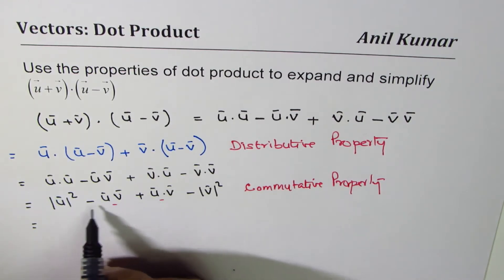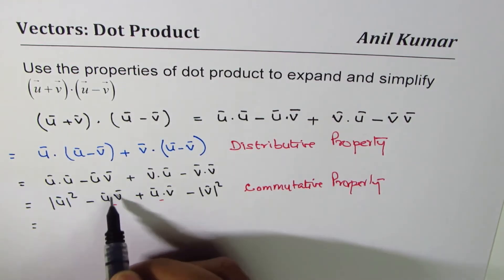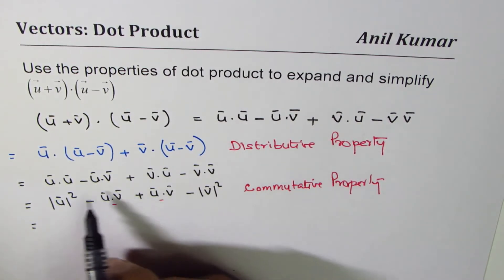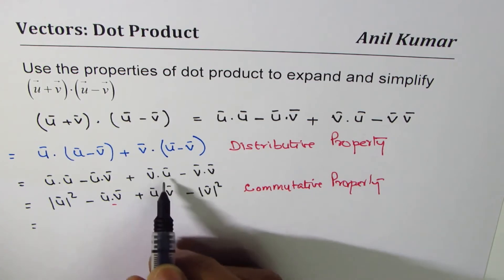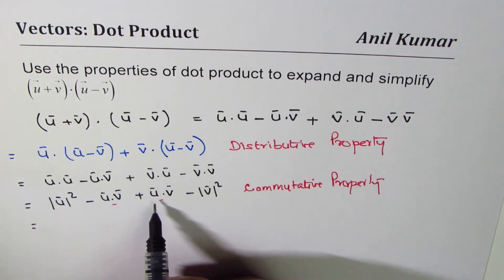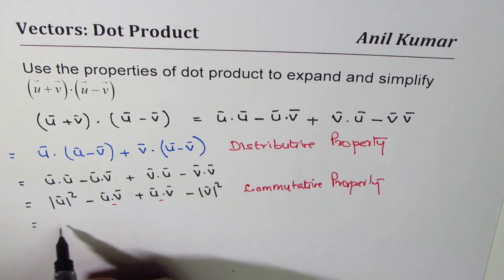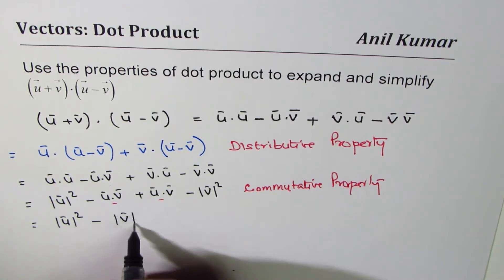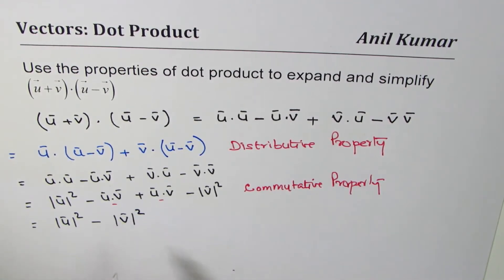So this is zero, minus u dot v plus - I mean dot product. In vectors we don't have multiplication as shown - we have dot product or cross product or scalar multiples. So we get magnitude of u squared minus magnitude of v squared. That's what we get since the sum of these two is zero. That is how we can use properties and find the result of the given question.